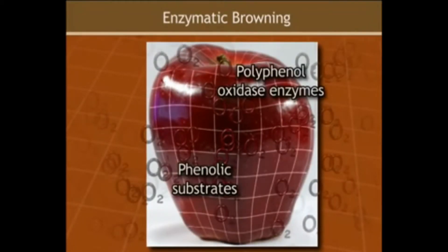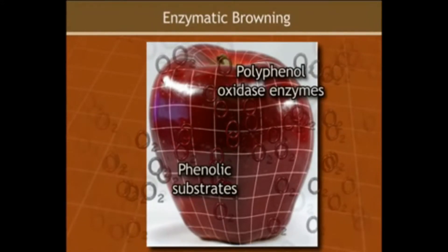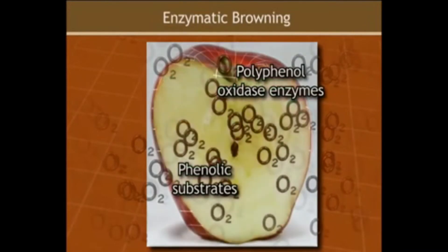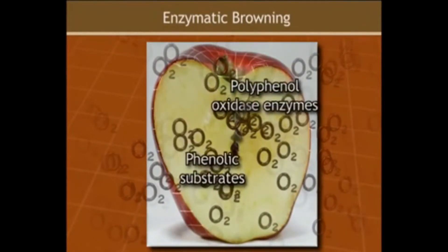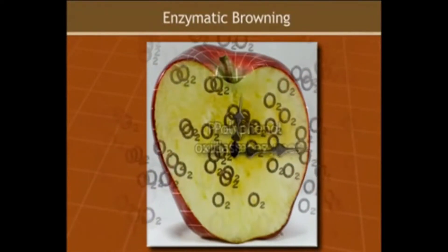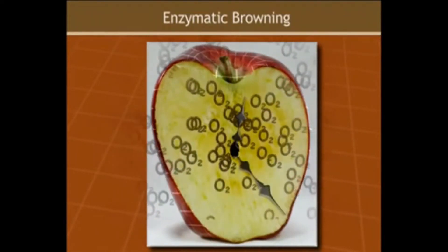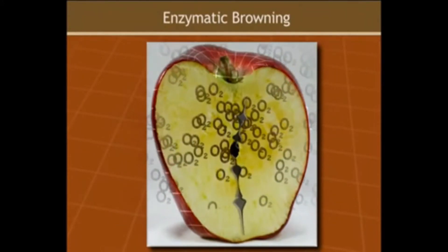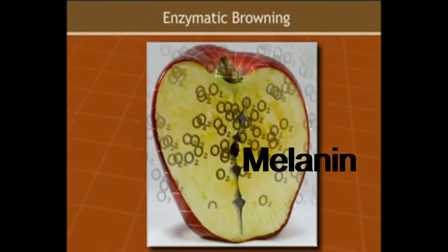Especially in apples and potatoes, when these are exposed to oxygen in the air — for example through slicing — the oxygen causes a reaction. The polyphenol oxidase enzyme changes the phenols into melanin, which causes the brown pigment.